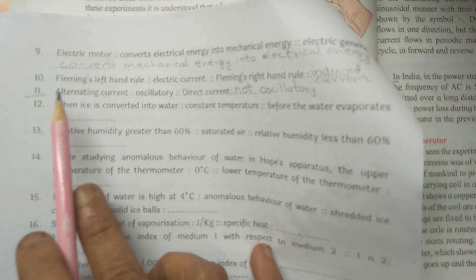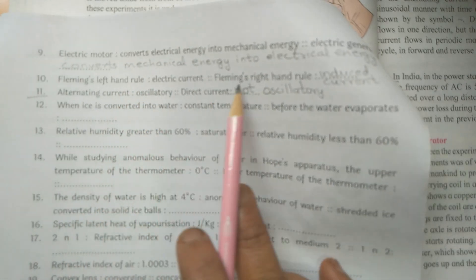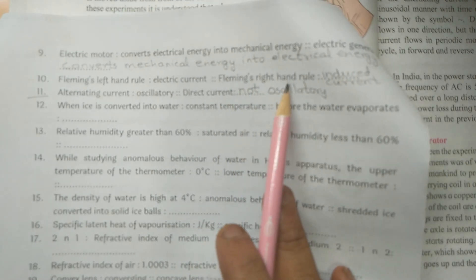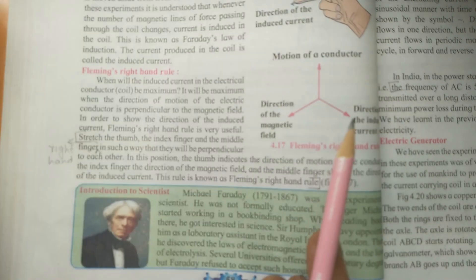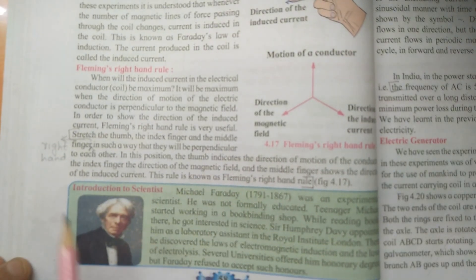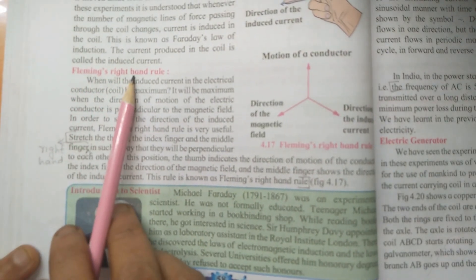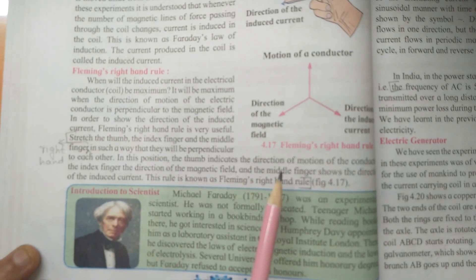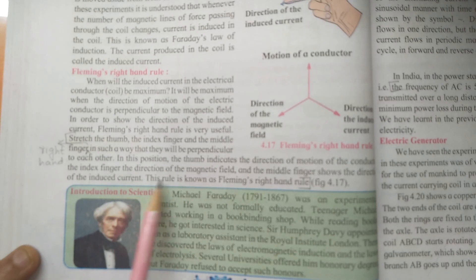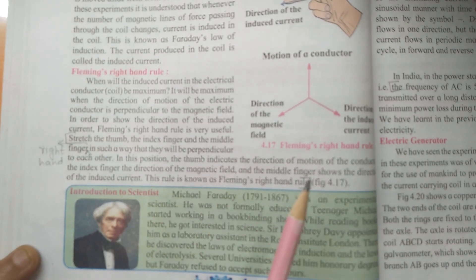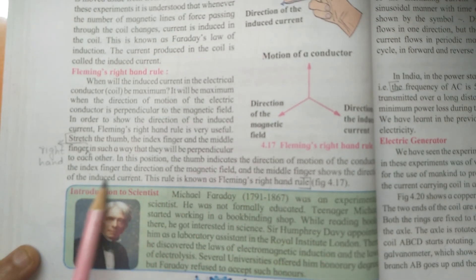Q10: Fleming's left hand rule finds out the direction of electric current in a conductor. Fleming's right hand rule finds out the induced current, as given on page number 58. The middle finger shows the direction of the induced current. So this rule - Fleming's right hand rule - is used to find out the direction of the induced current.